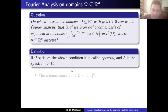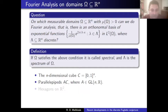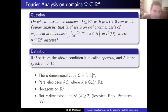Some well-known domains where you can always do Fourier series include the n-dimensional cube. You also have spectral sets that are parallelepipeds — an invertible linear transformation applied to the n-dimensional cube. Something different is hexagons in R^2, which also have this property. But not n-dimensional balls, as Iosevich, Katz, and Pedersen proved in 1999. Fuglede himself had proved this for the disc (the two-dimensional ball), and this was generalized by these three people in all dimensions.